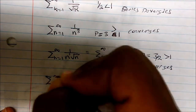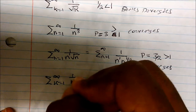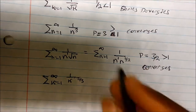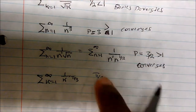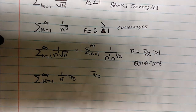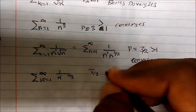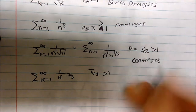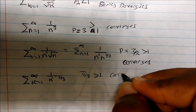What about the sum where k equals one to positive infinity of one over k to the pi over three? In this case pi over three is P. We know pi is approximately 3.14, and 3.14 divided by 3 gives us something greater than one, so the series converges.